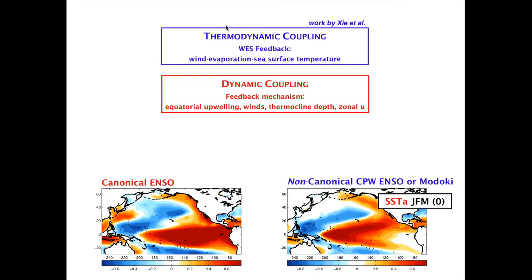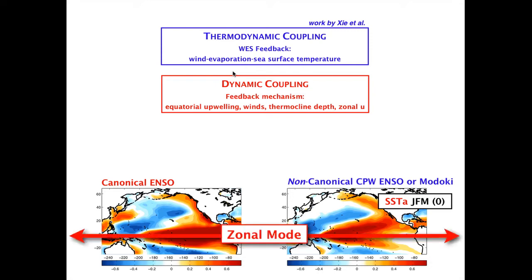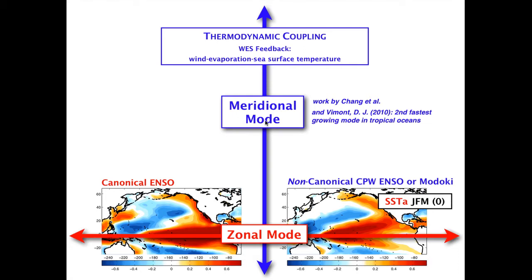These two types of feedback dynamics act differently. The dynamic coupling that involves the ocean typically evolves along the zonal plane at the equator, so I'm going to refer to this as zonal mode dynamics. In contrast, the thermodynamic coupling involves the meridional plane, and as such has been referred to as meridional mode dynamics.